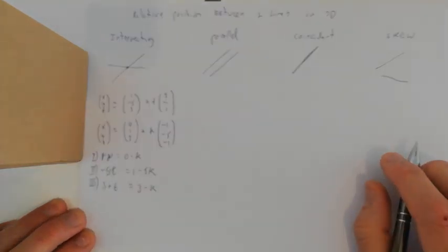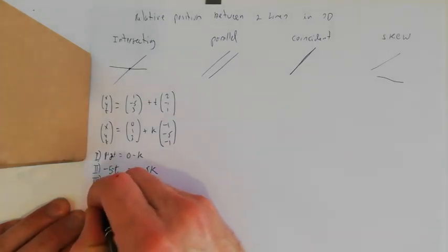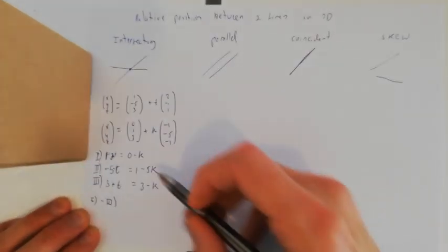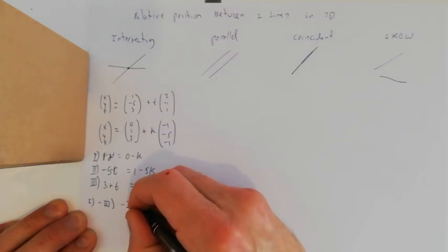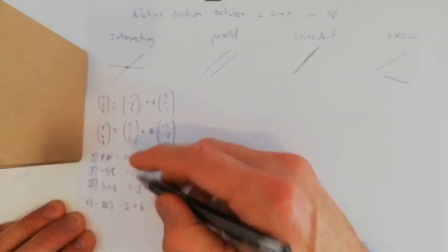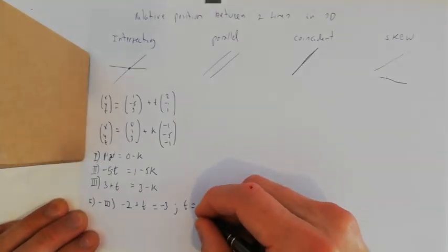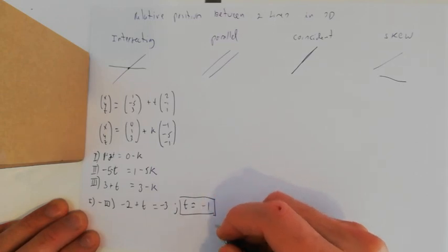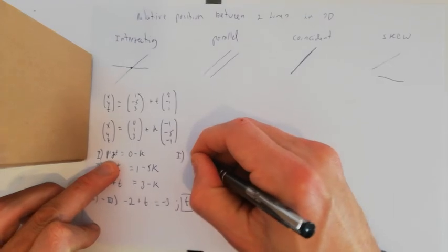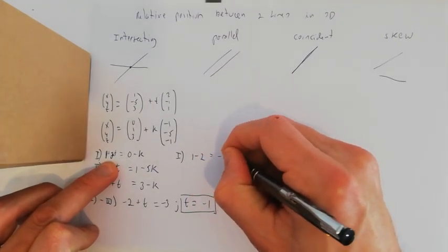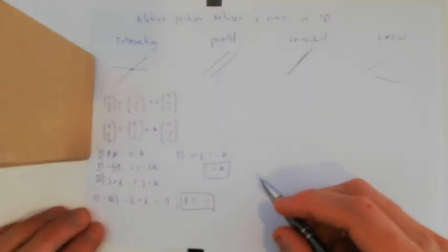Using elimination, equation 1 minus equation 3 eliminates k. That gives 1 − 3 = −2 and 2t − t = t, so t = −1. Plugging t = −1 into equation 1: 1 − 2 = −k, therefore k = 1.